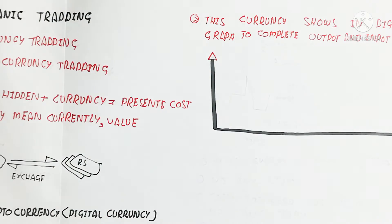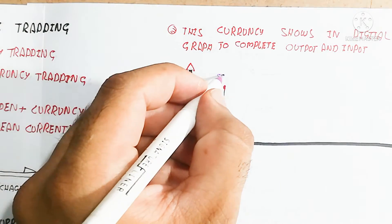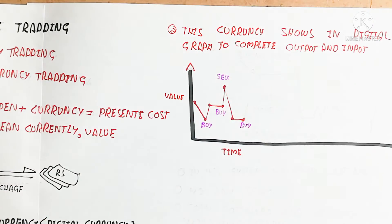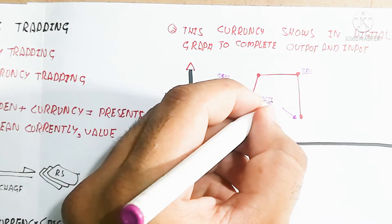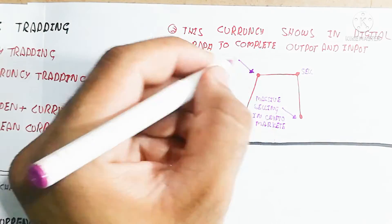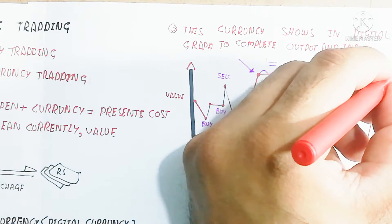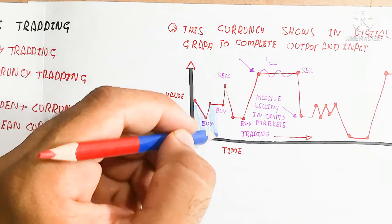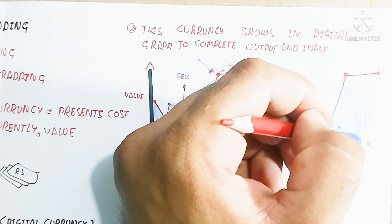The currency is shown in a digital graph with value on one axis and time on the other. When people are buying coins, the graph goes up — more buyers means the graph goes higher. When people sell, the graph goes down, meaning value drops due to more coins entering the market. Massive selling in the crypto market has a harmful effect, drastically decreasing the coin's value. This is the volatility — the unstable nature of cryptocurrency.